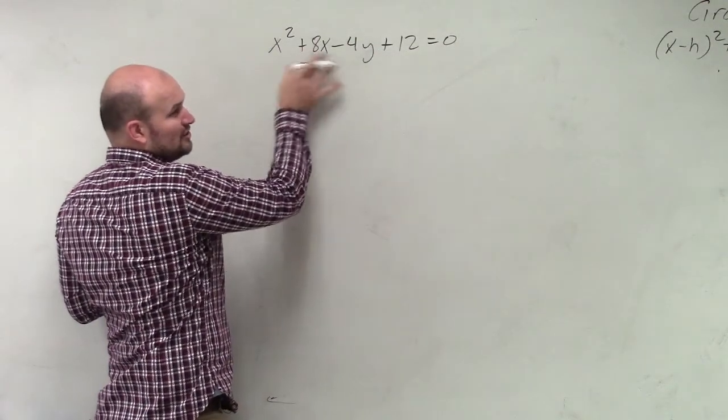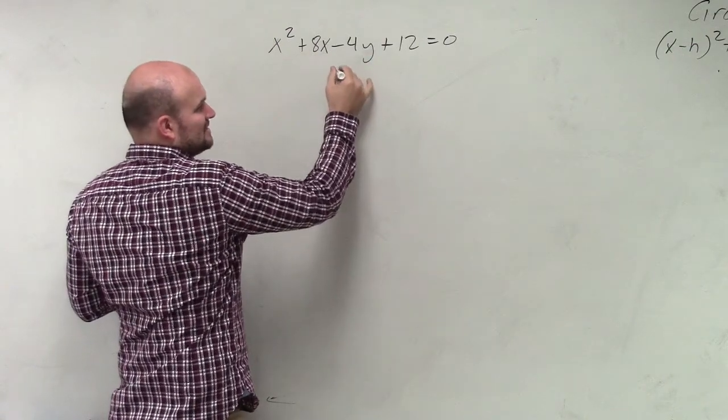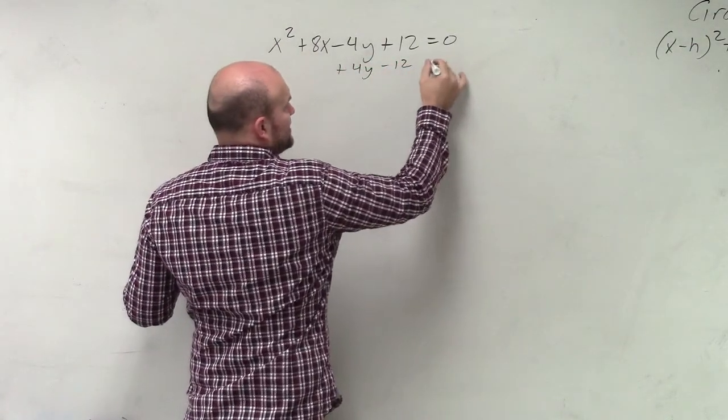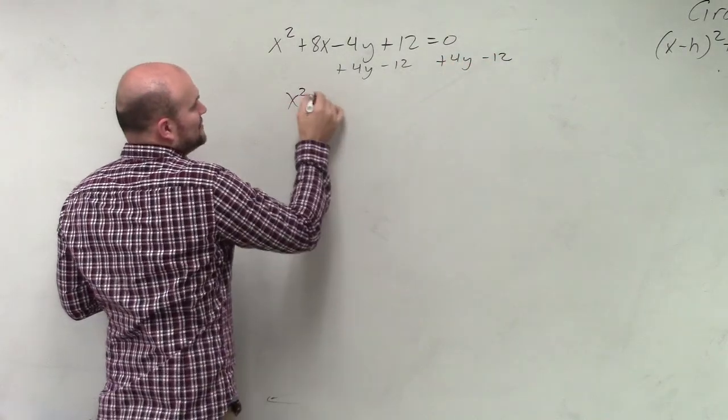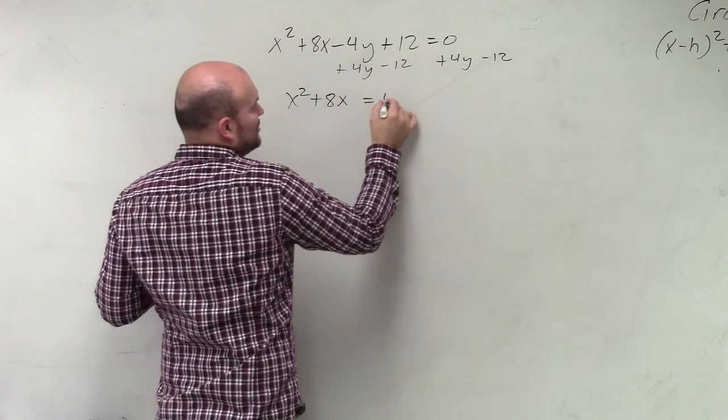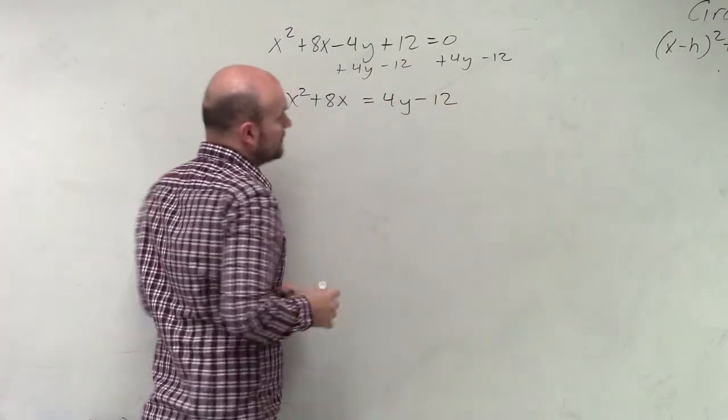Now, you could keep the y, the 12 over here. But I'm just going to tell you for simplicity purposes, we might as well just get it to the other side. So therefore, I have x² + 8x = 4y - 12.